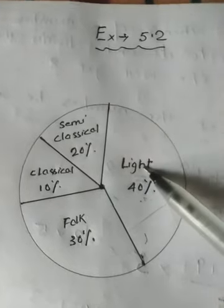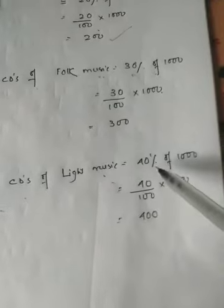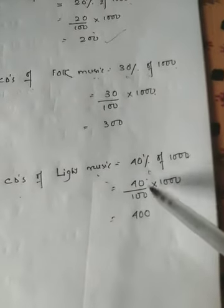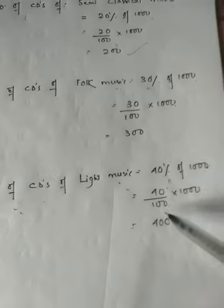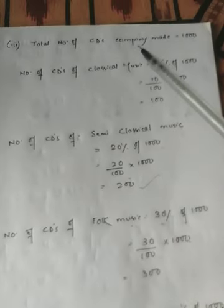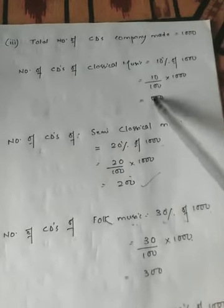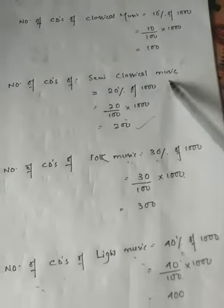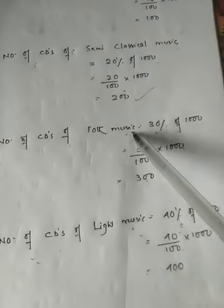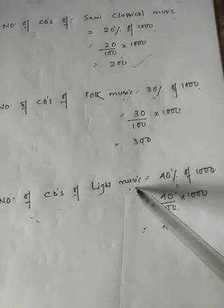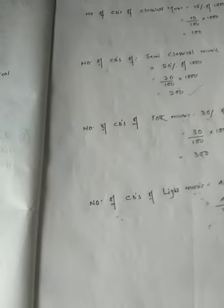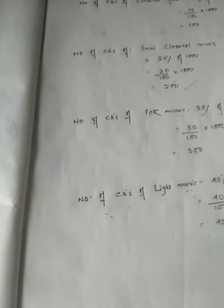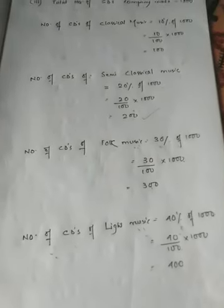Finally, the number of CDs of light music — the most popular at 40 percent — is 40 percent of 1000, that is (40/100) × 1000 = 400 CDs. So the company will make 100 classical, 200 semi-classical, 300 folk, and 400 light music CDs. This is the solution of question number one. Thank you and God bless you all.